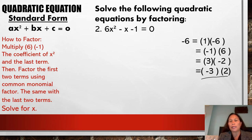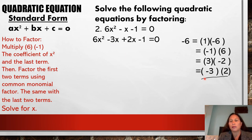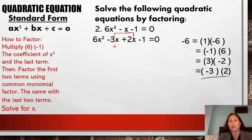What we do next is just copy the 6x squared and replace the middle term negative x with negative 3x plus positive 2x — using the factors we selected. Then copy the last term, negative 1, and set it equal to 0. This new expression is equivalent to the original equation — we just replaced negative x with the expanded factor terms.